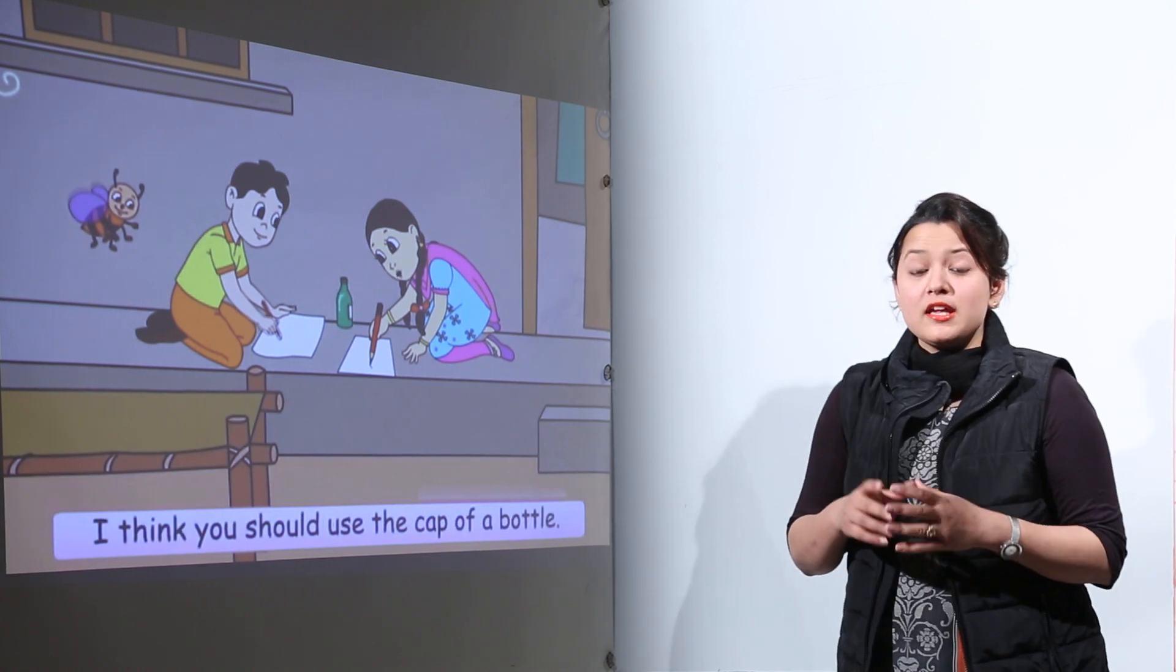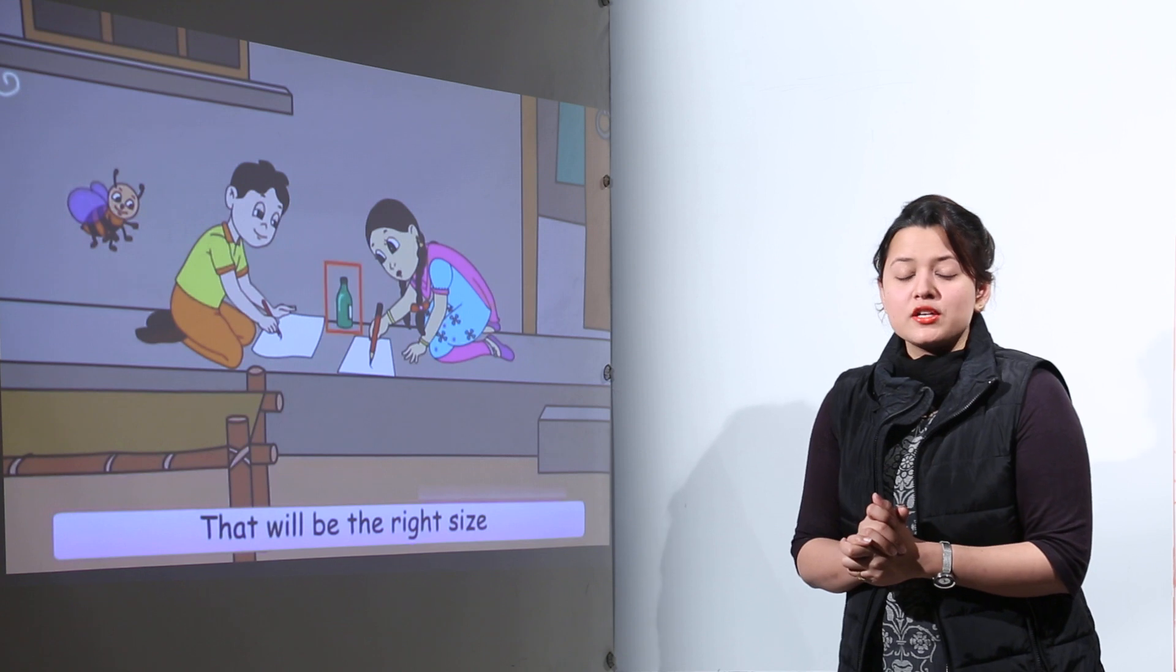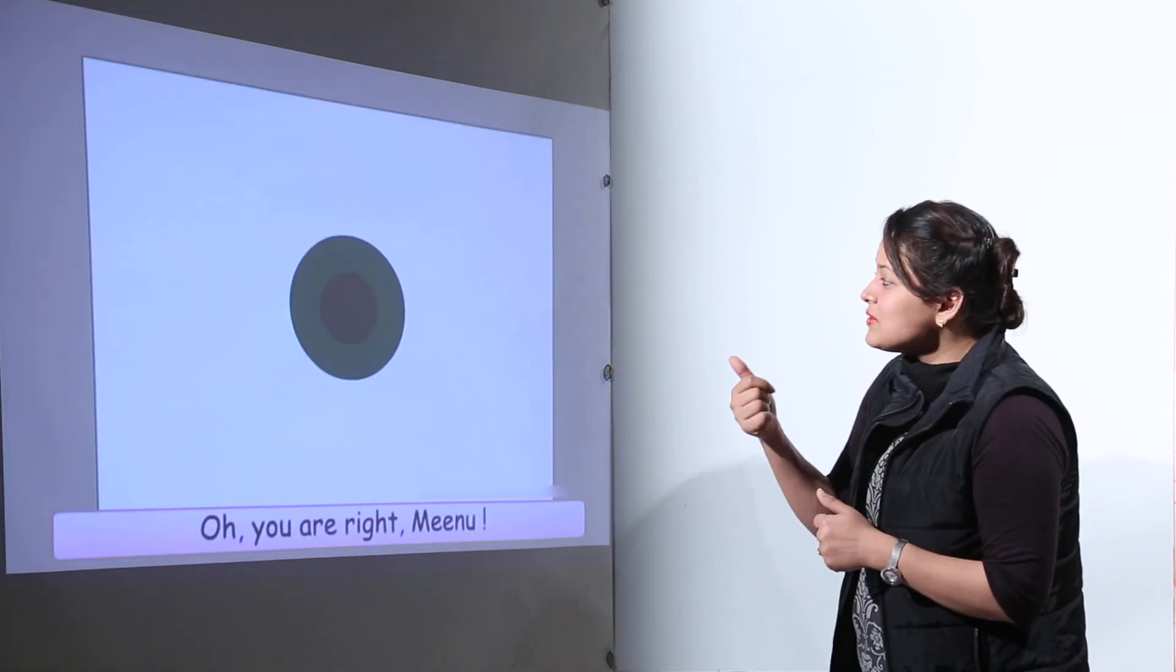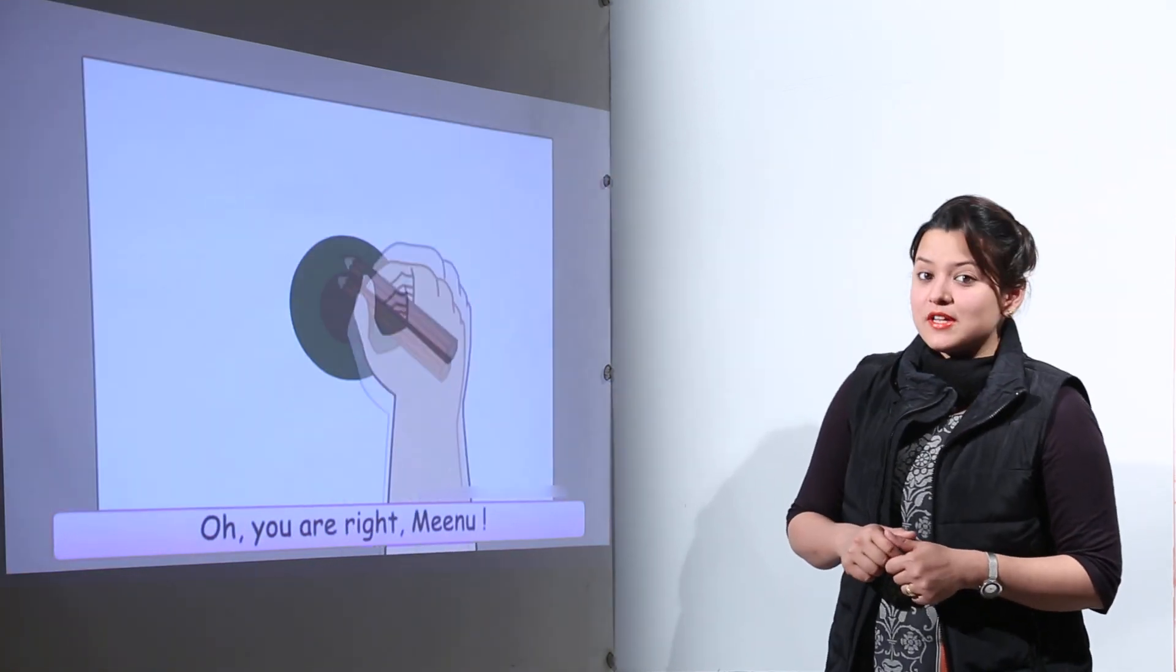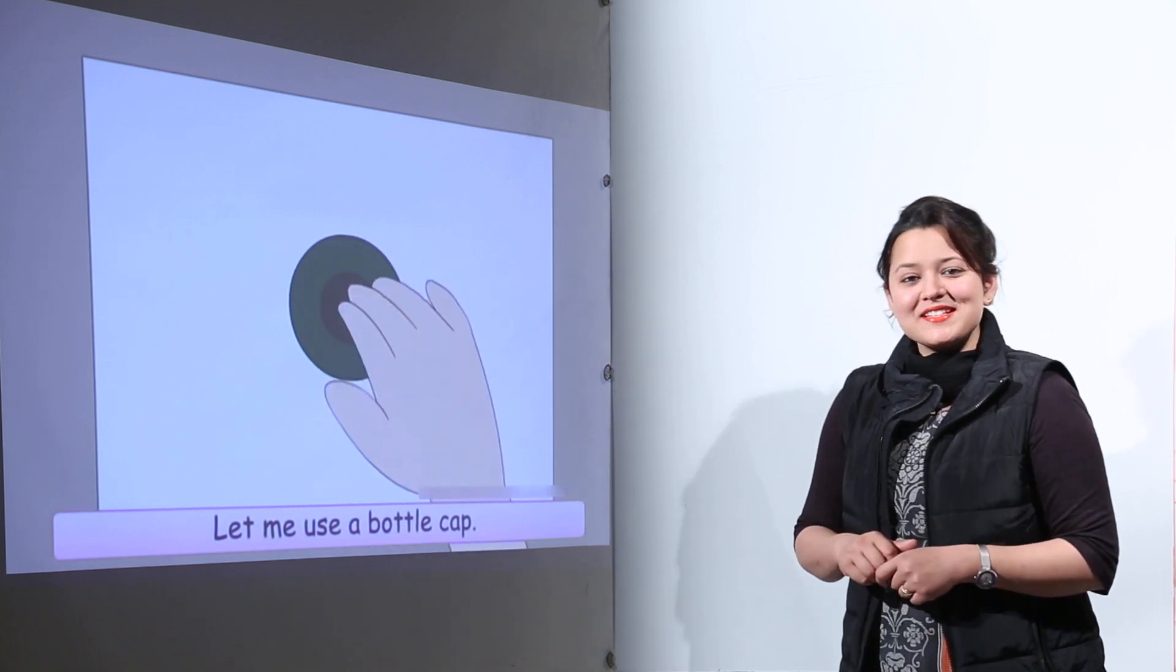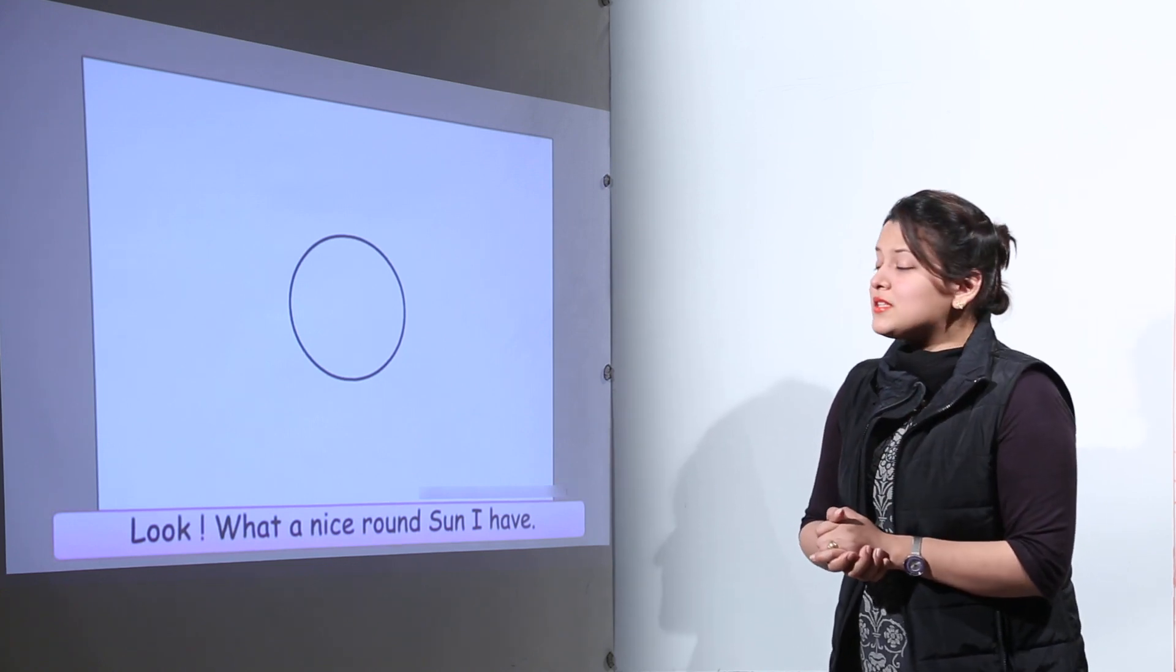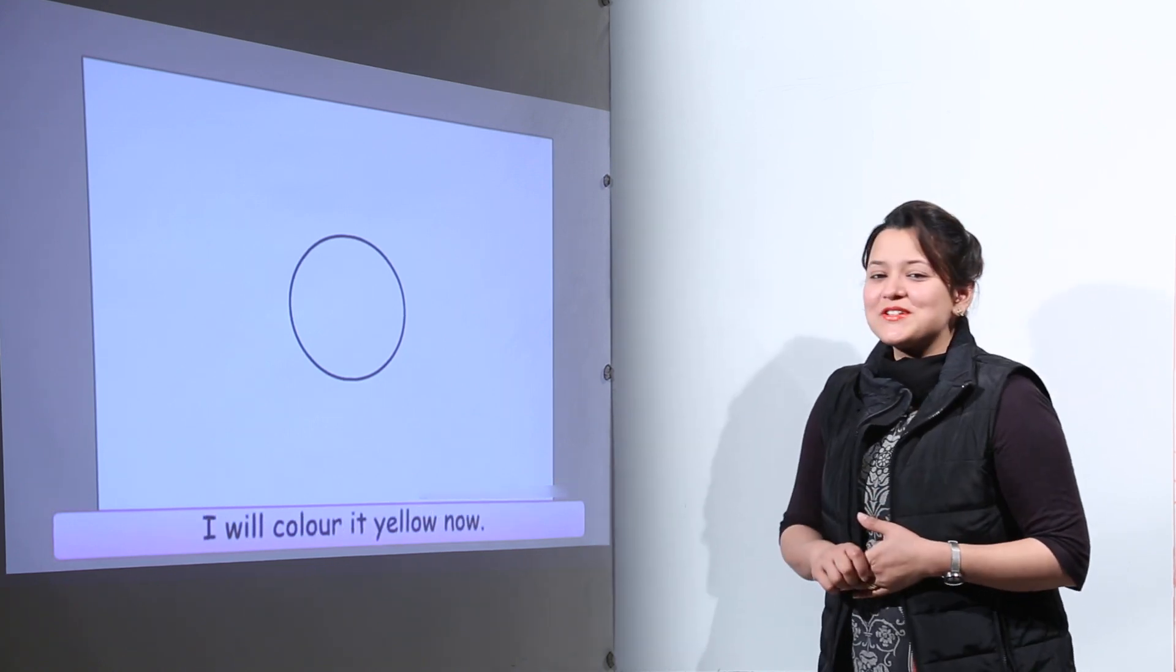Minu explained that using her bangle would make too big a sun. She suggested using a bottle cap instead. You can see that Chinu used the bottle cap and made a sun of appropriate size. Otherwise the sun would have become too big. Now he's going to color it yellow.